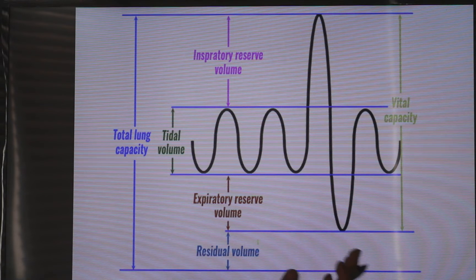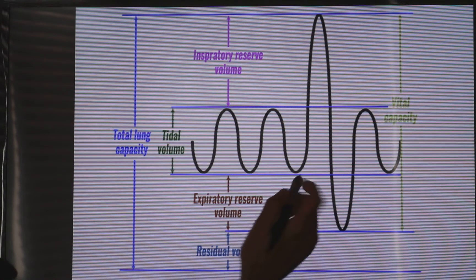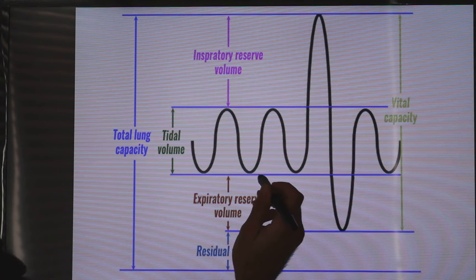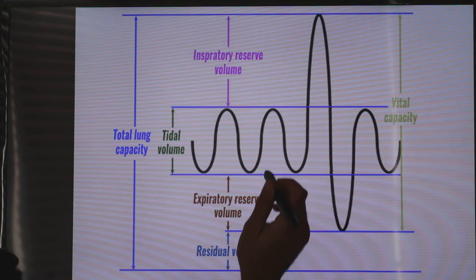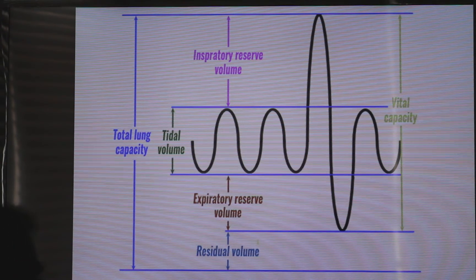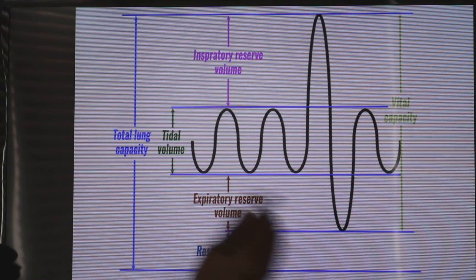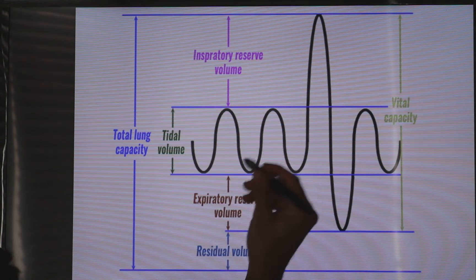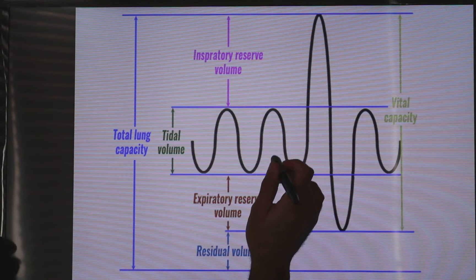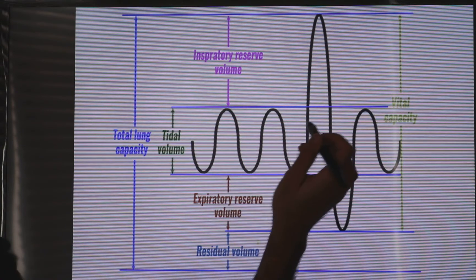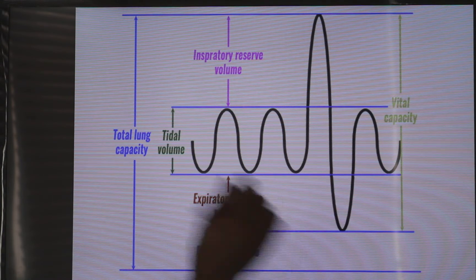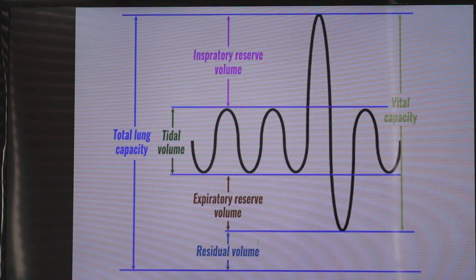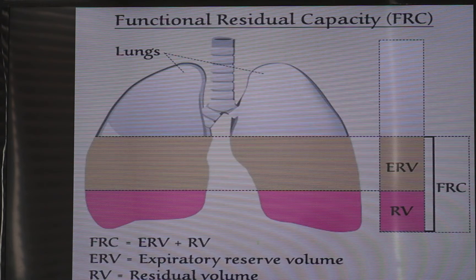When the patient reaches 66 years old, the closing capacity will be at or even above the functional residual capacity even when the patient is in the sitting position. This is the concept of closing capacity, and with this I end the talk about lung volumes and capacities.